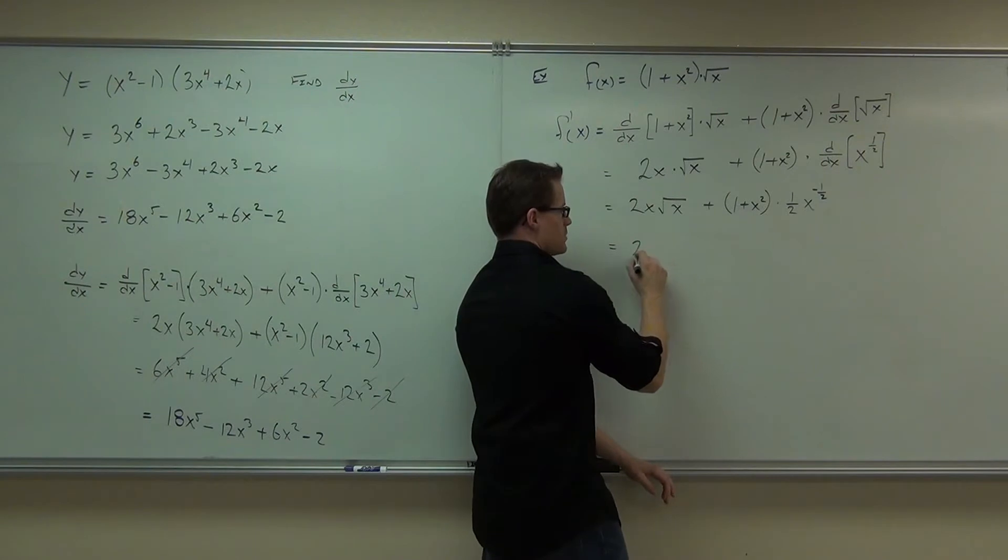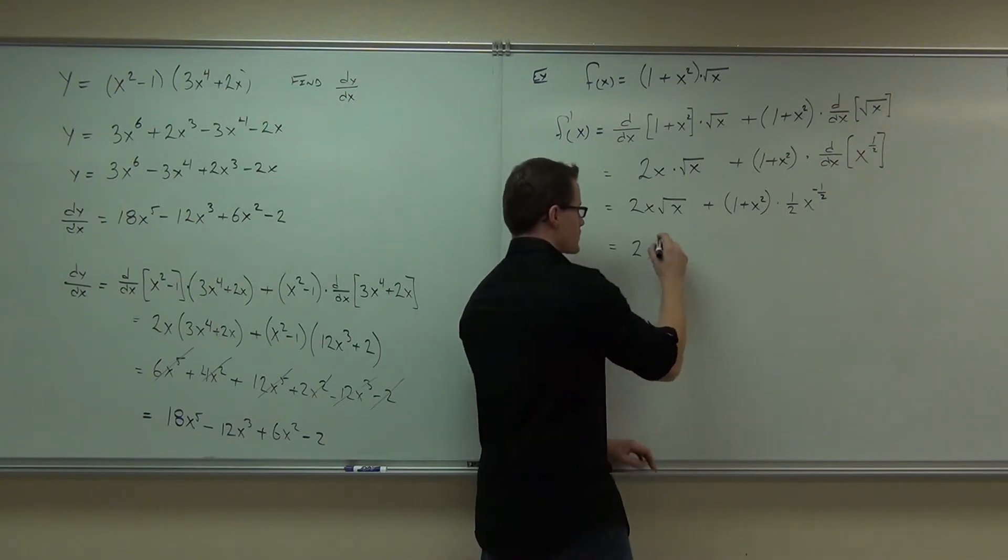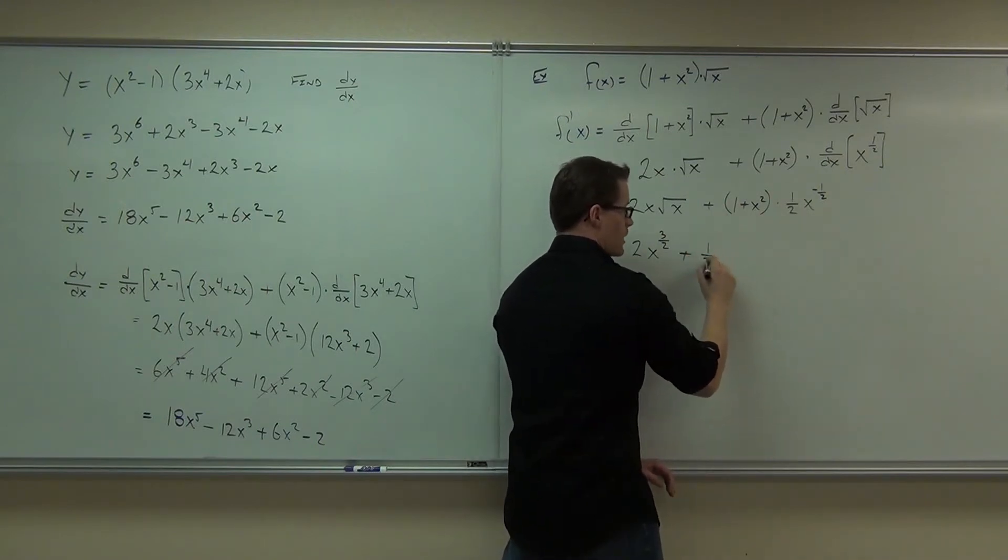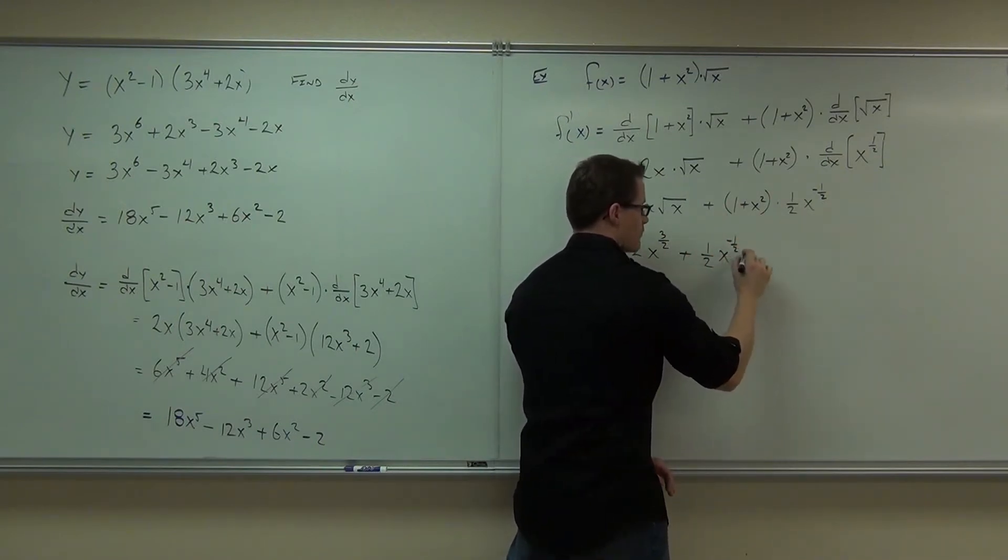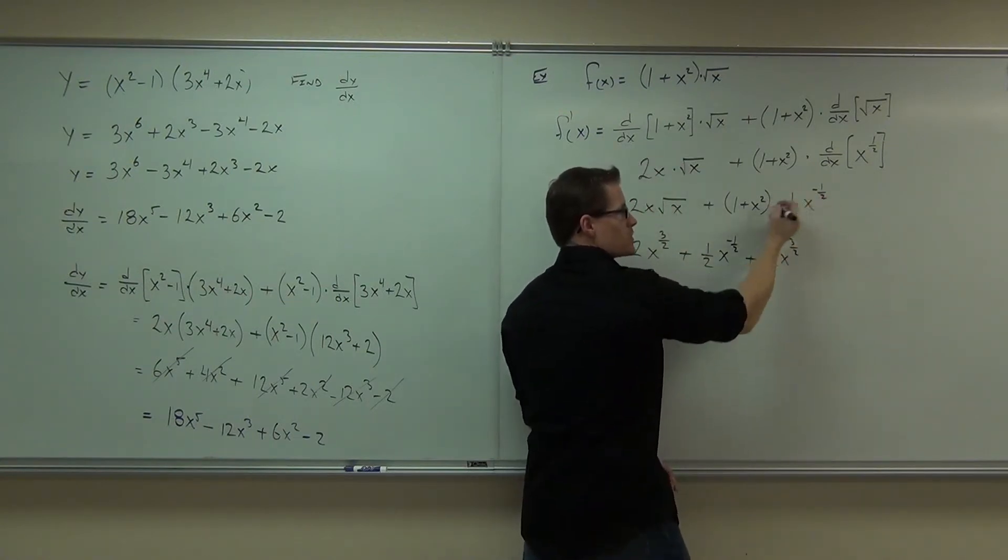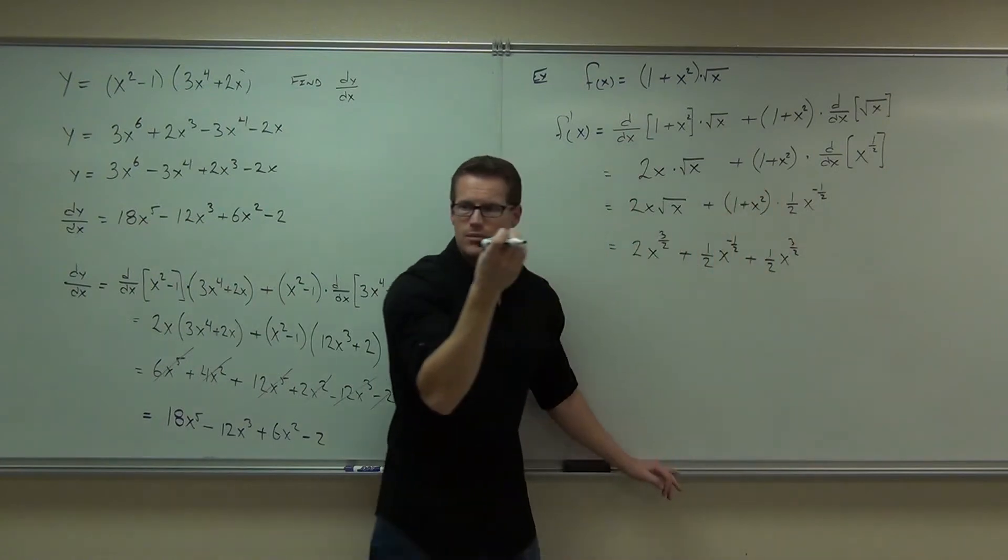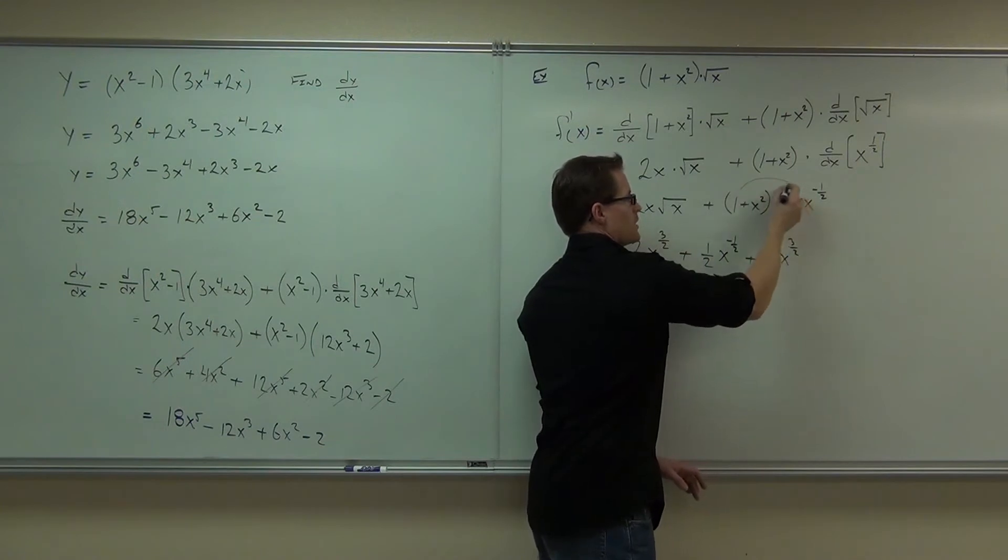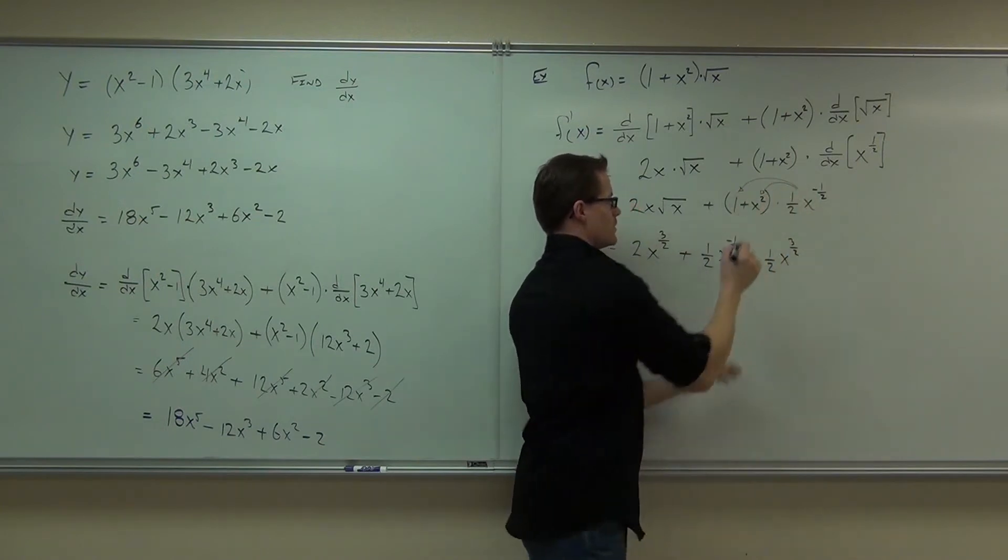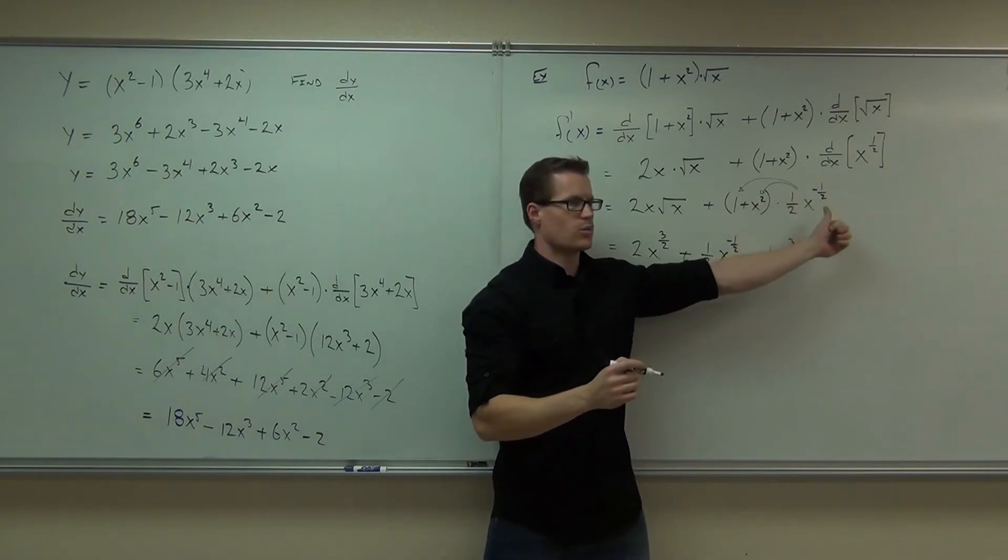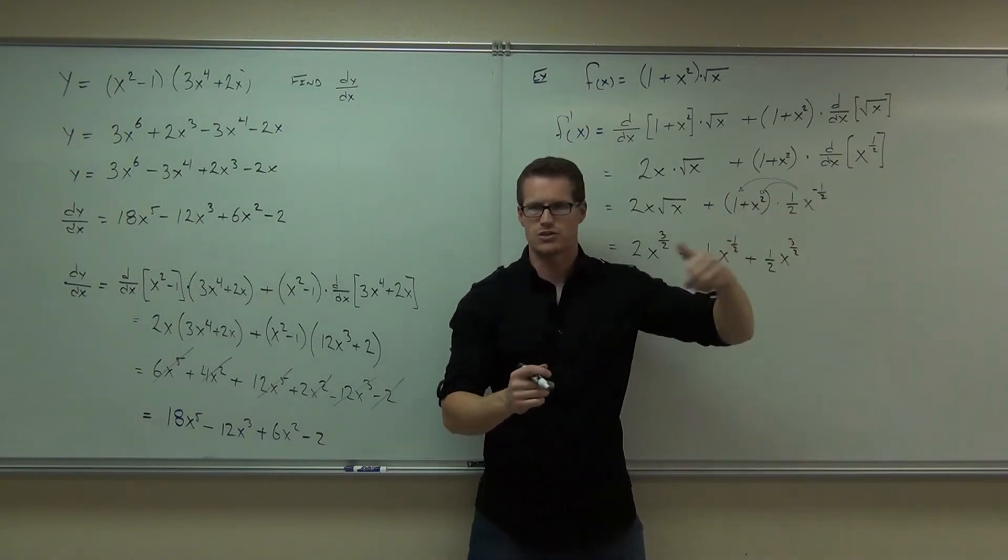Because you'd have 2 x to the 3 halves. Yeah, we could do that. We could try that. So this is 2 x to the 3 halves. Let's see. 1 plus 1 half is 3 halves. If we distribute, you'll get 1 half x to the negative 1 half plus 1 half x to the 3 halves. And we're getting that because, of course, when you multiply those exponents, you add them.